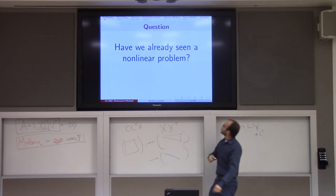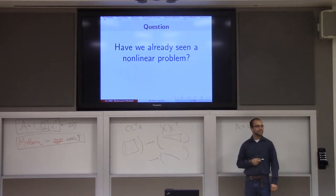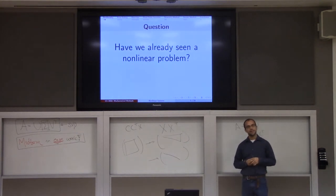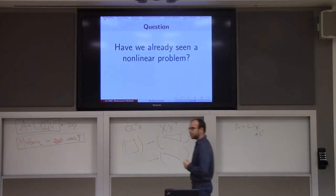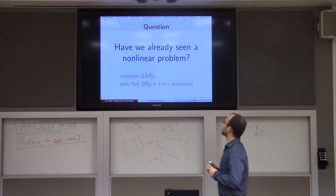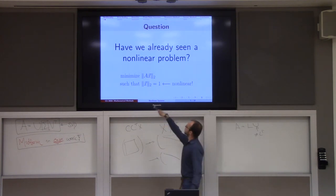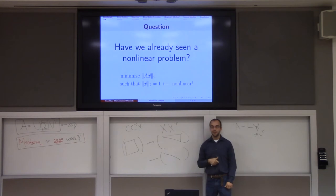A quick question: have we already seen a nonlinear problem in this class? We have — like where we had our quadratic Lagrange multiplier. When you solved the eigenvalue problem, one of the ways that equality problems appear is by minimizing Ax such that the norm of x equals 1. That constraint is a nonlinear constraint. It doesn't look like it because we're used to seeing this in linear algebra class, but this is a nonlinear problem.